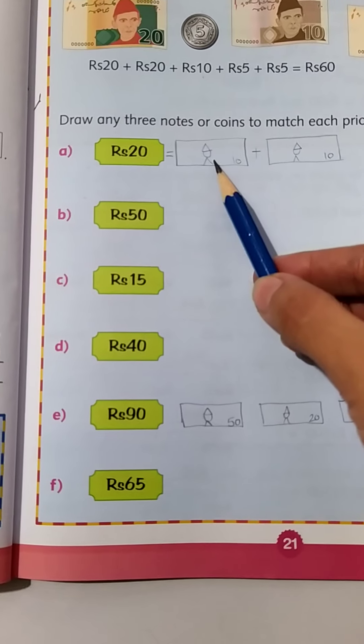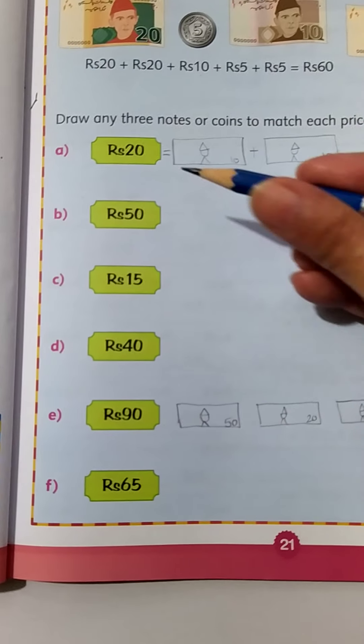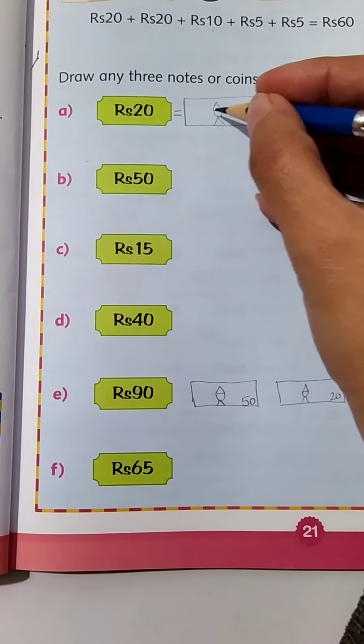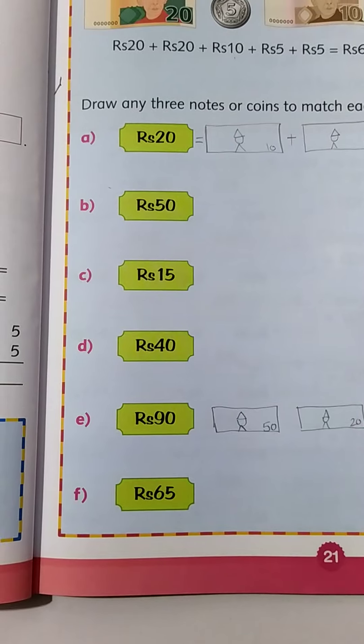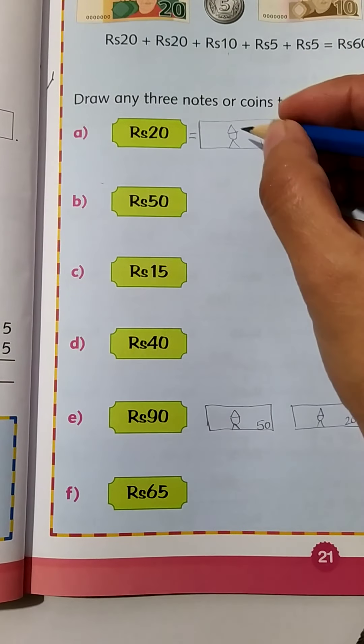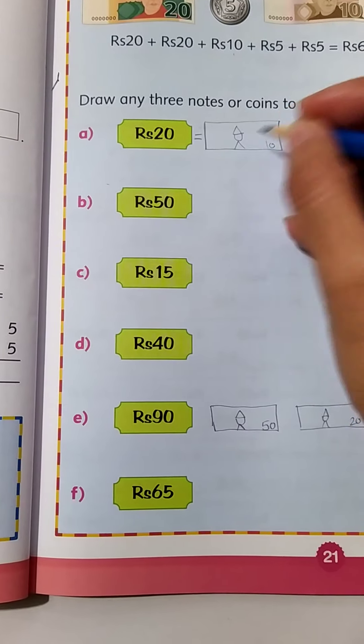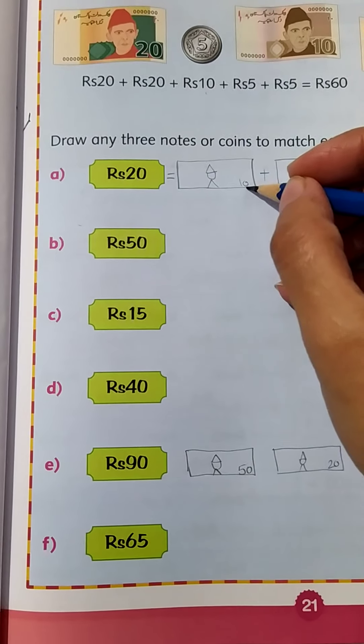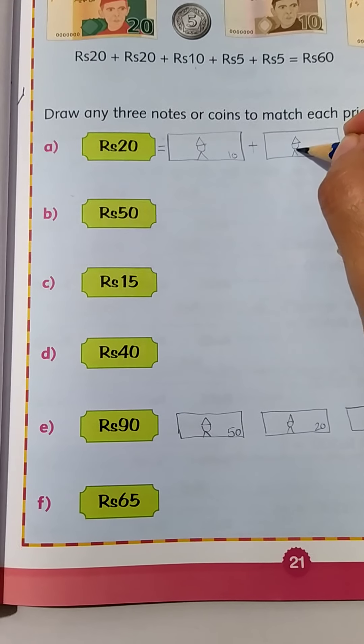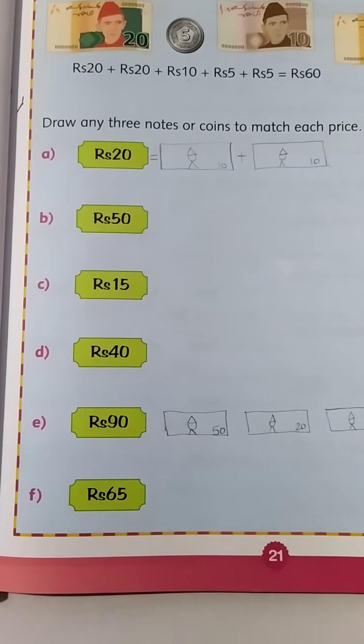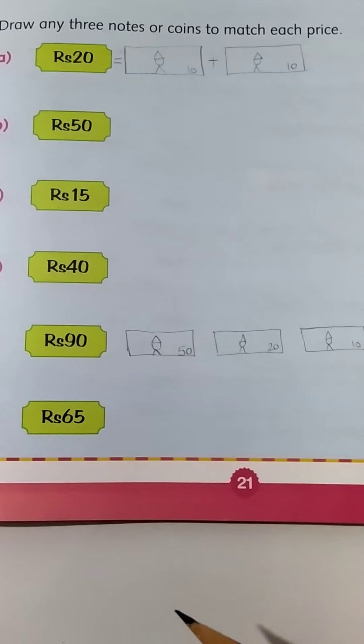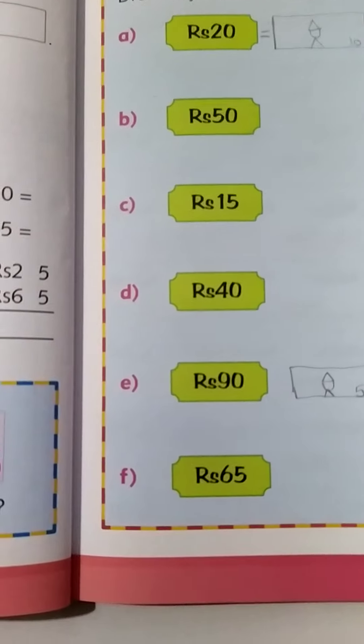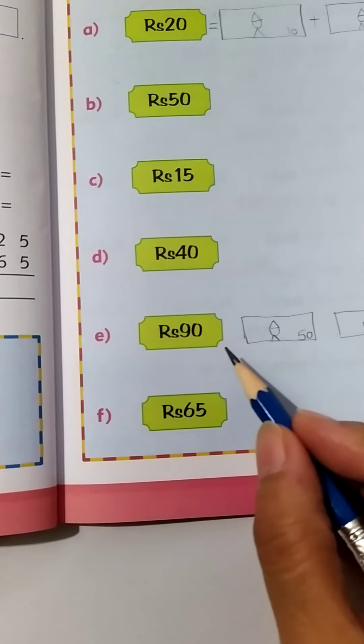Draw any three notes, they are asking you to draw notes. There is our Quaid-e-Azam. I didn't draw his face, I just drew a figure and this is 10 rupee and again 10 rupee and our beloved Quaid-e-Azam. Okay, so that's how you are going to divide the note into smaller notes.